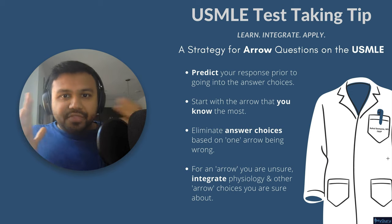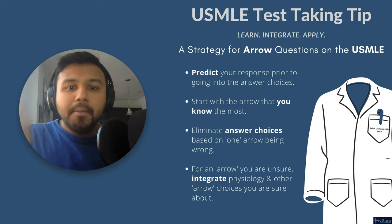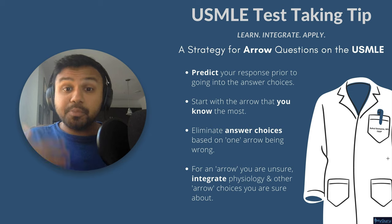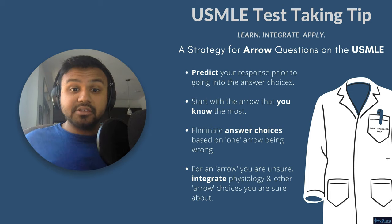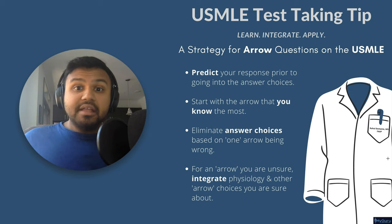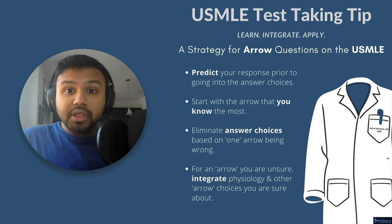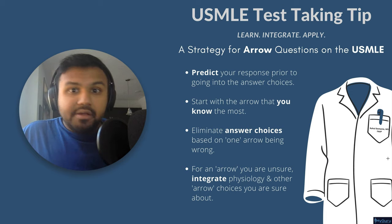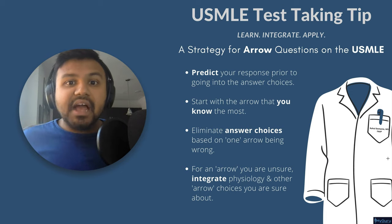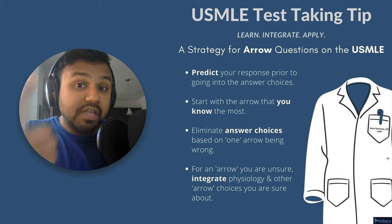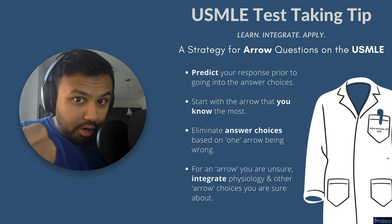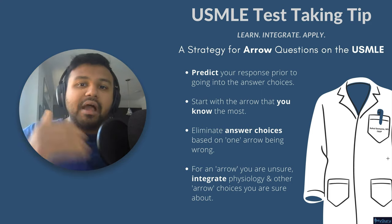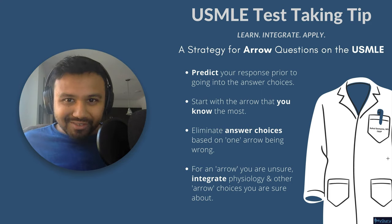So this strategy is very important. Predict your response prior to going to the answer choices. Start with the arrow that you know. The arrows that are totally wrong — eliminate the whole answer choice. And then finally, the arrows you're not sure of: look at the physiology and look at the other arrows that you are sure of to figure out the unsure arrows.